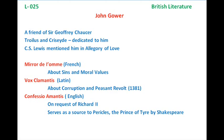The third poem is called Confessio Amantis, written in English — the first work was in French, the second in Latin. Confessio Amantis means 'the lover's confession' and is considered a masterpiece by John Gower, expanding over 33,000 lines in Middle English. It is written in octosyllabic couplet.